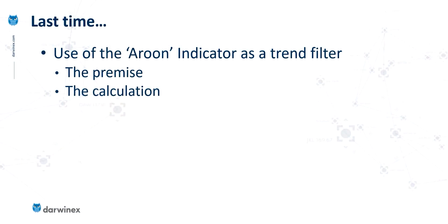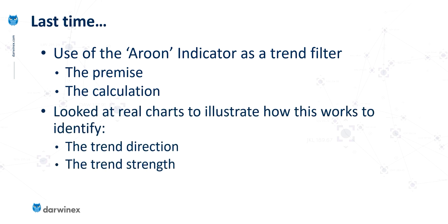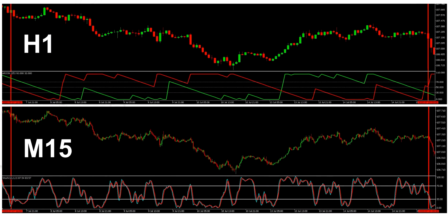As I explained last time, it's a really simple calculation which I like in any indicator. We then took a look at some real charts to illustrate how the indicator worked and how it gives us the information about firstly the trend direction, but also the trend strength. And so now we're going to look at the use of this indicator in conjunction with a trigger.